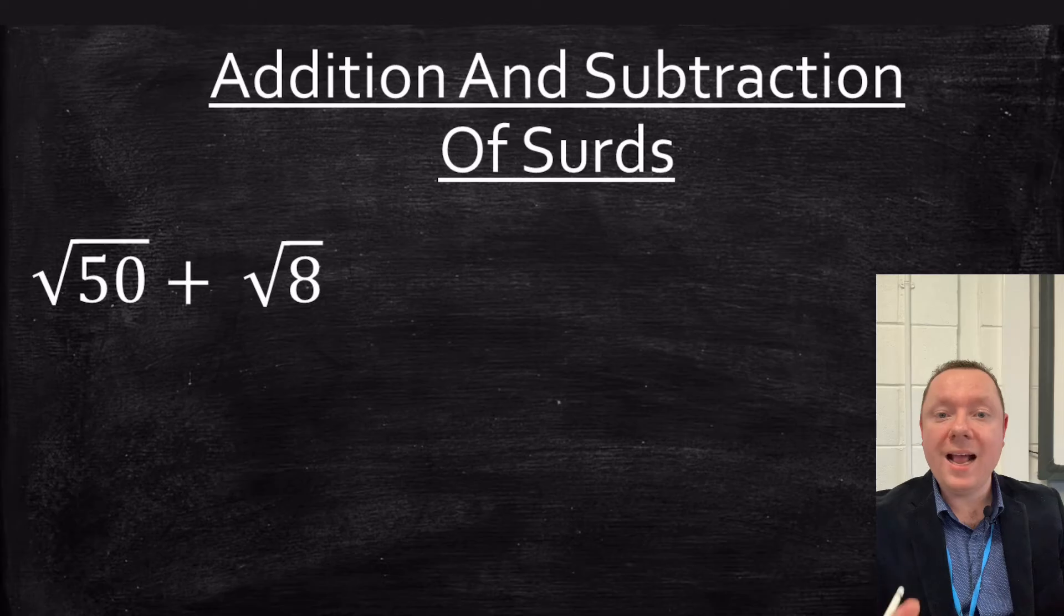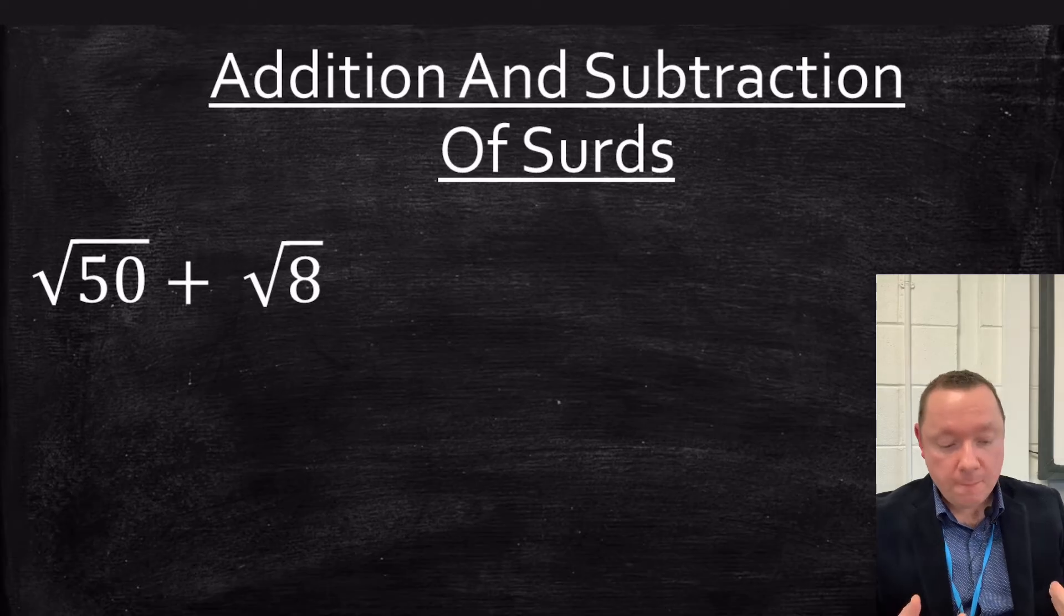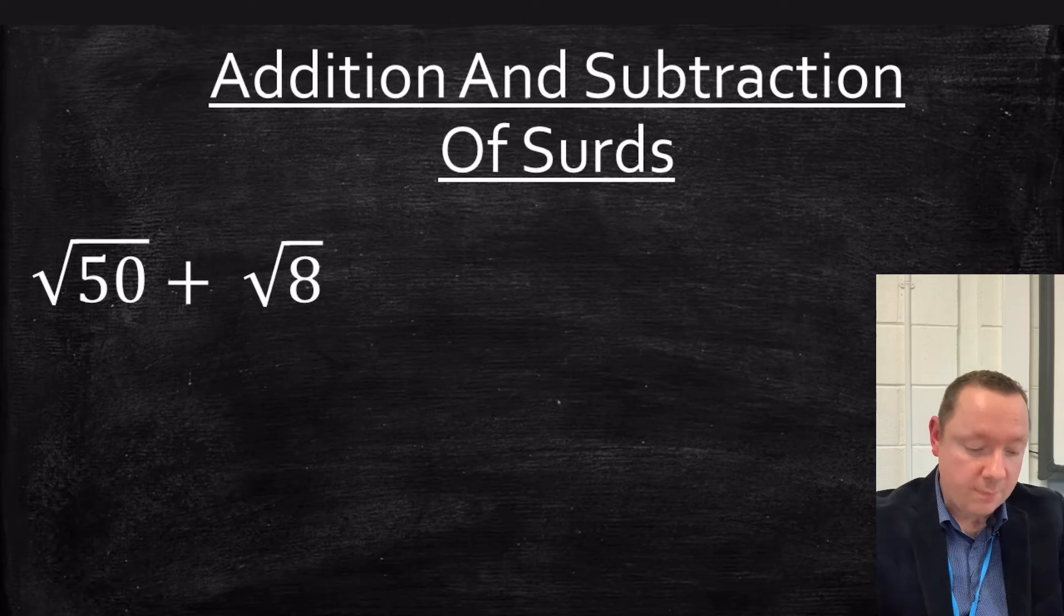Adding and subtracting surds. You can only add and subtract surds if the number under the square root is exactly the same. Otherwise you can't add them. But you can sometimes simplify a surd to make it look the same.